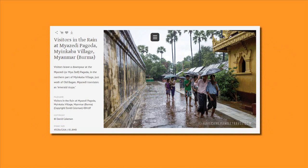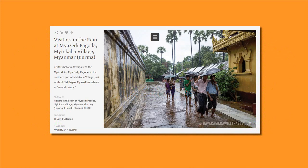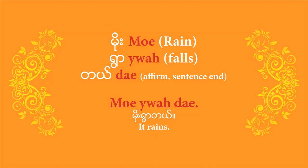Now listen to this sentence: 'Mo joare de.' I'll break it down for you. 'Mo' is the word for rain. 'Joare' is the verb — to fall down, to come down. 'De' is just the affirmative sentence-end particle.